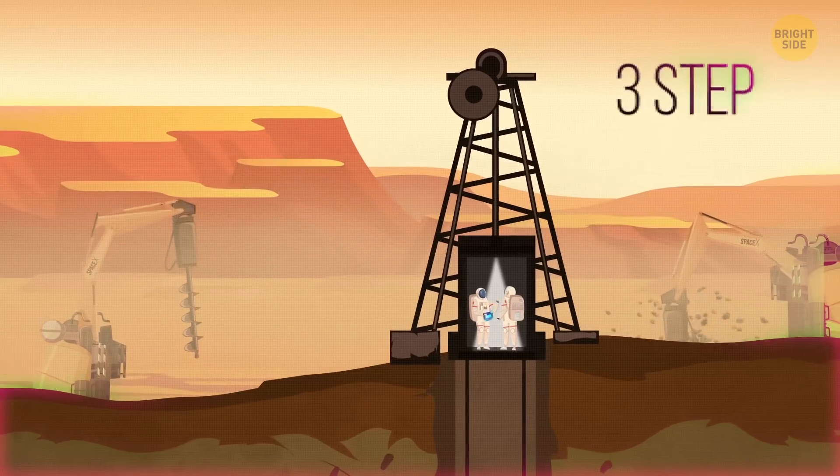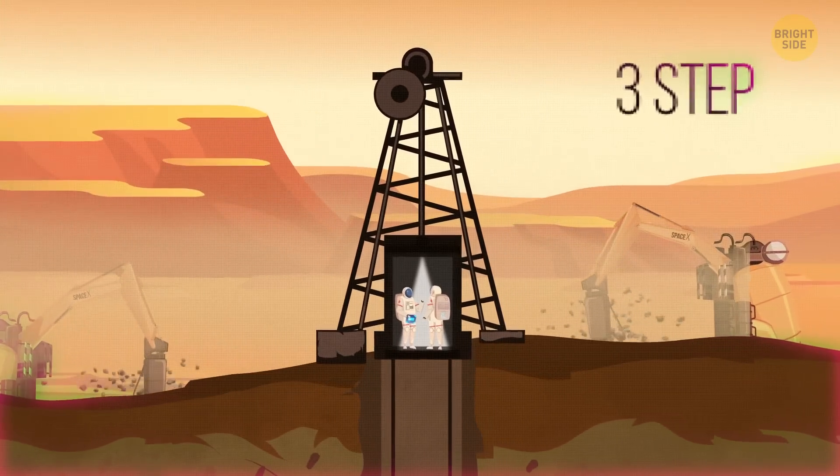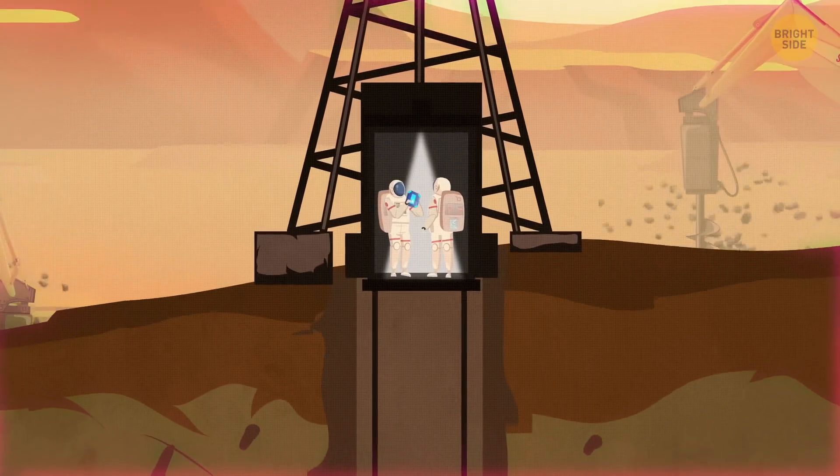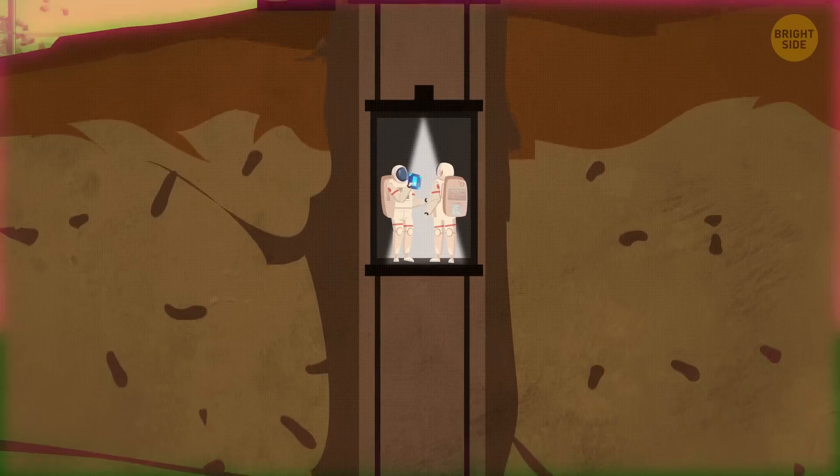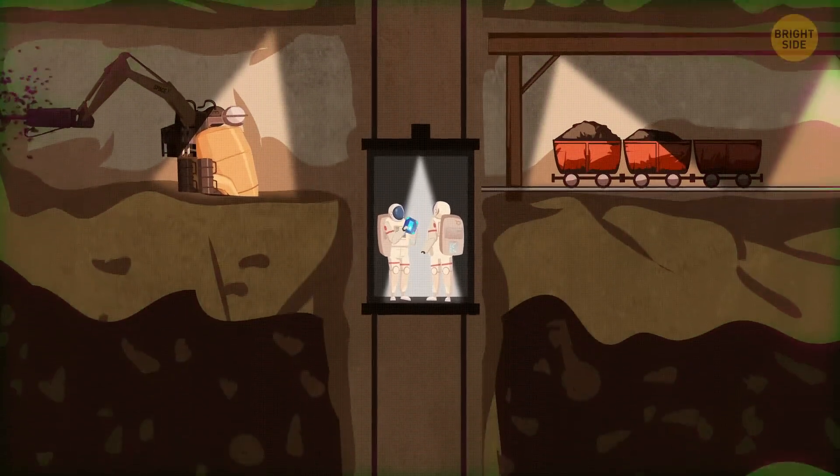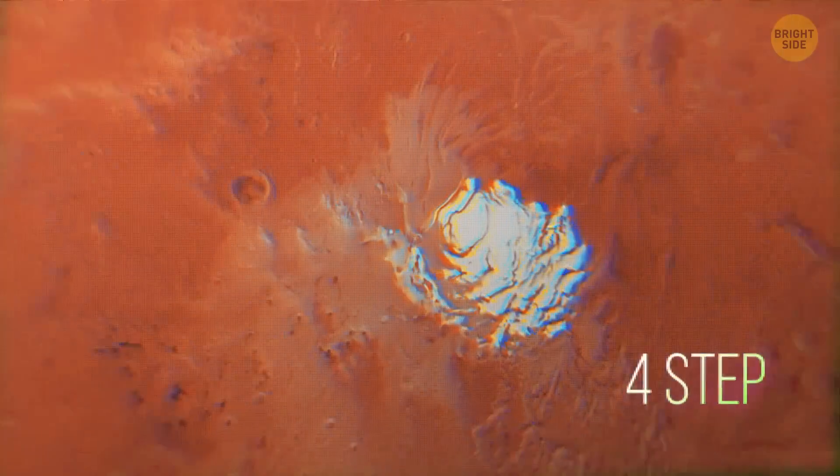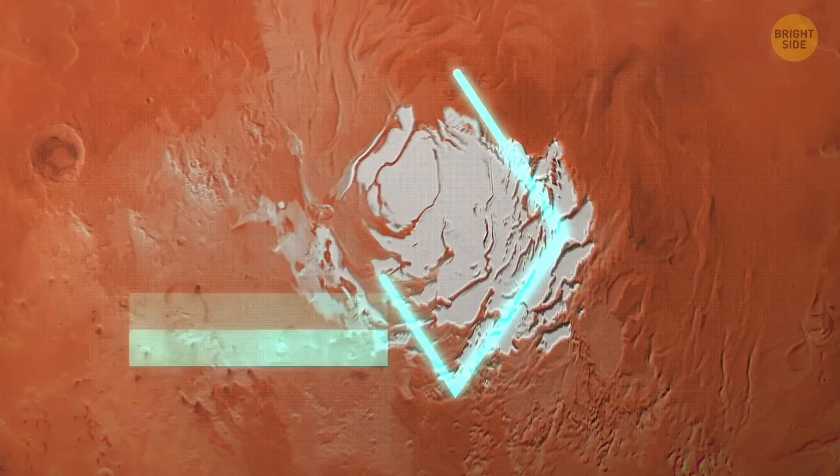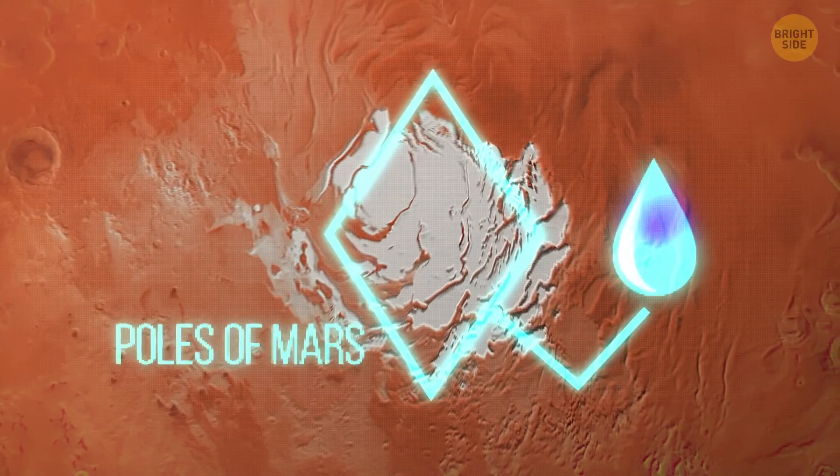The next step is to build houses. Because of the lack of atmosphere on Mars, nothing will protect us from the sun's radiation. So, a great option is to build houses underground. Now, we need to take care of water extraction. There are ice caps at the poles of Mars. We can take water from there.